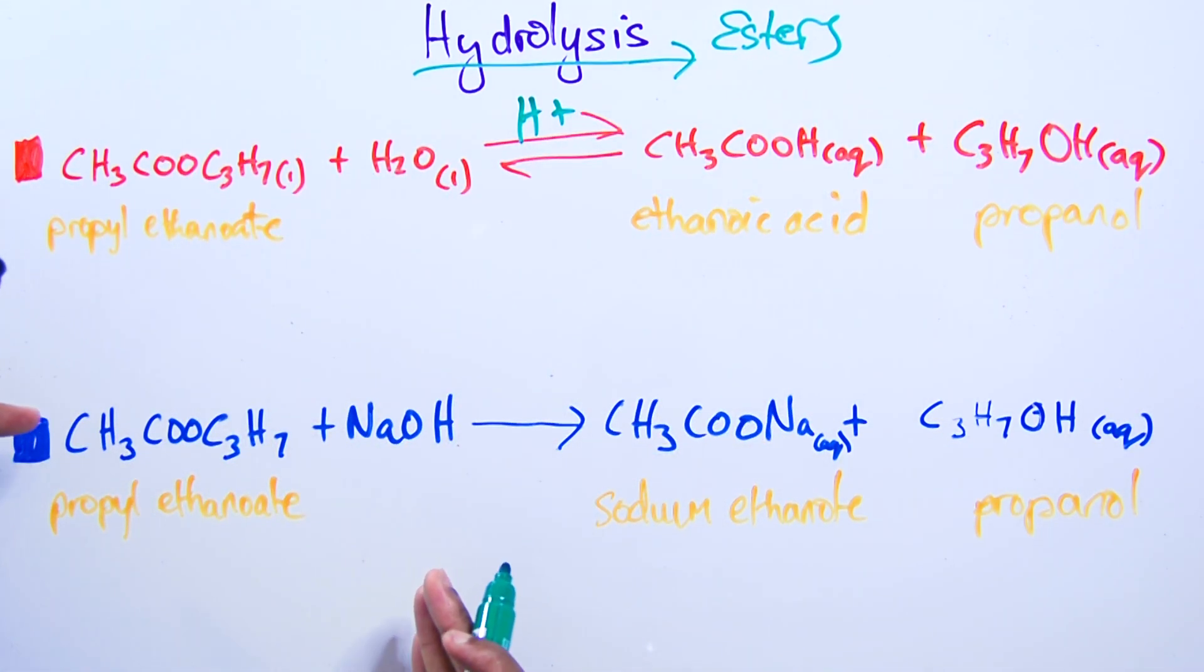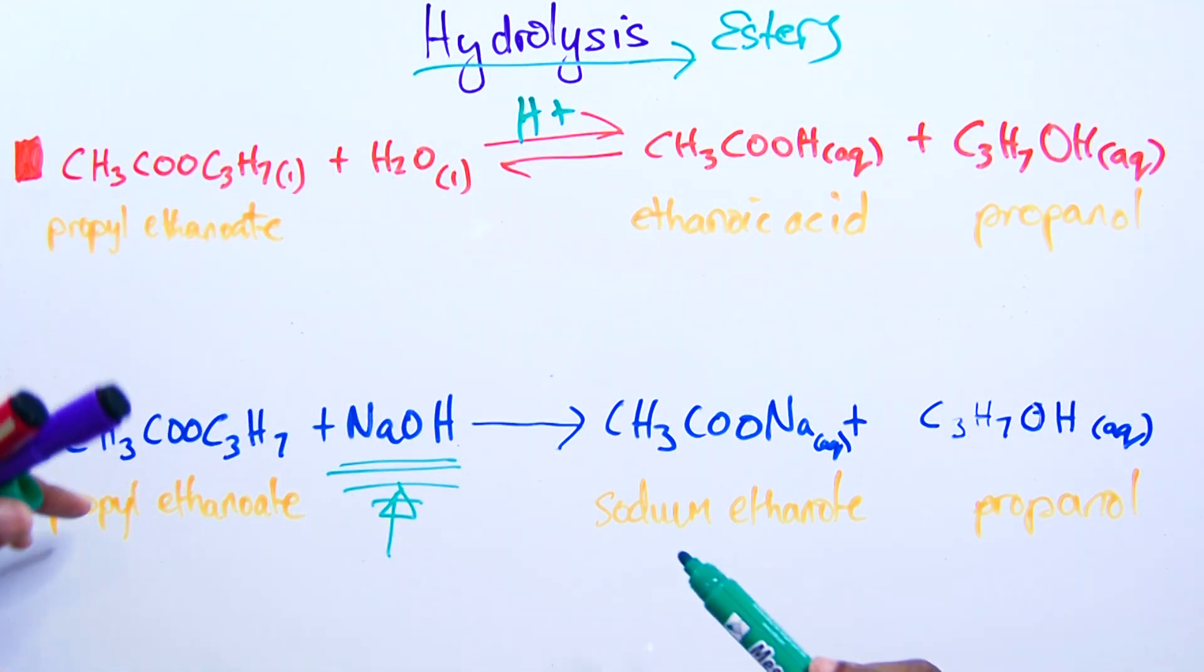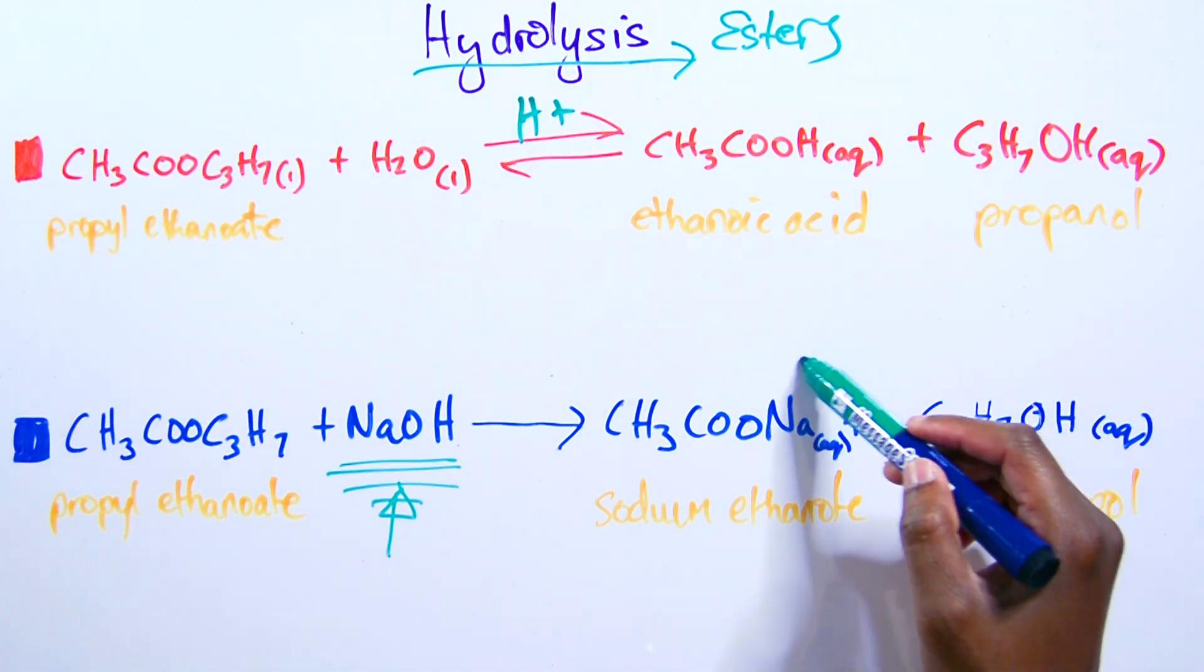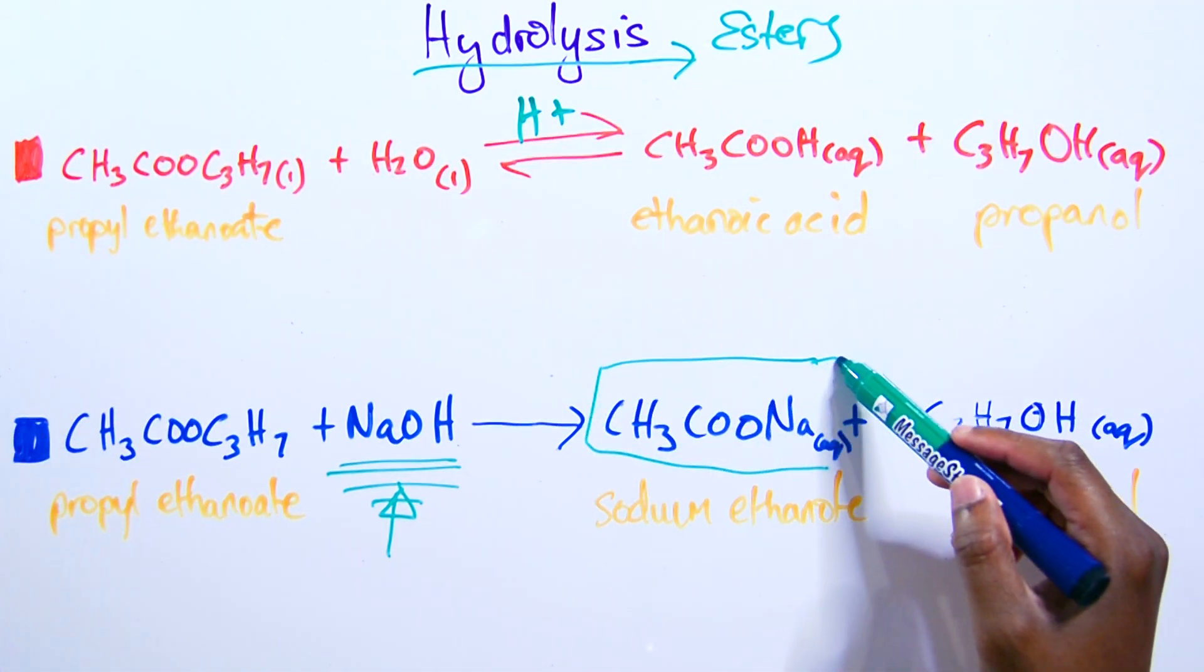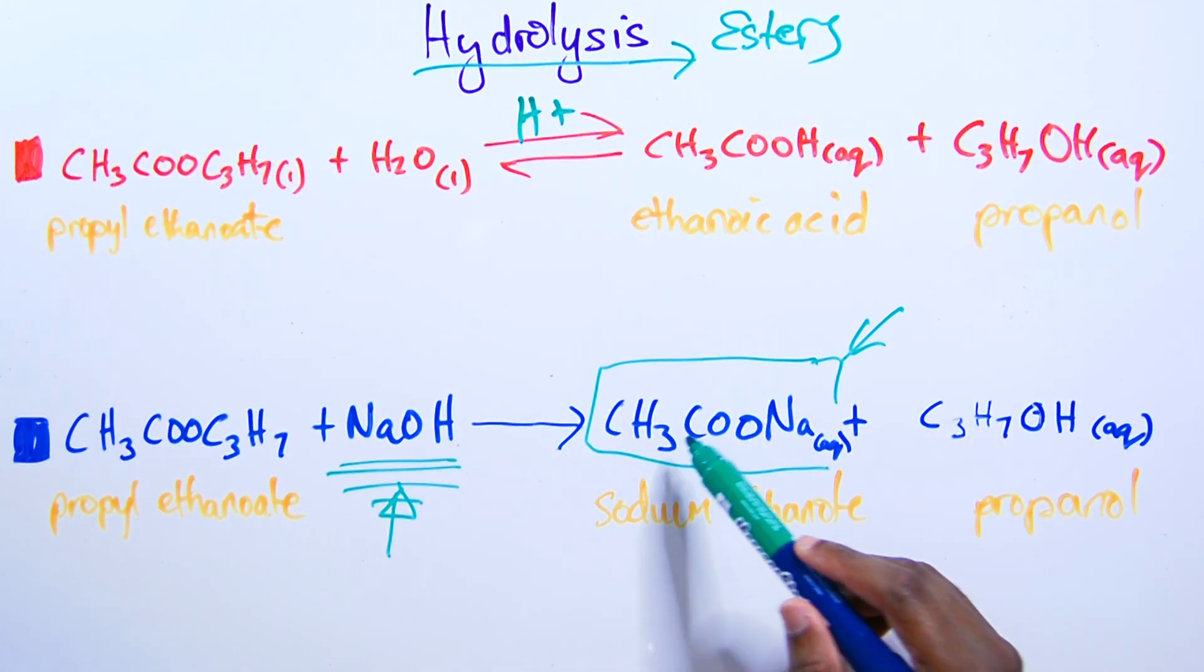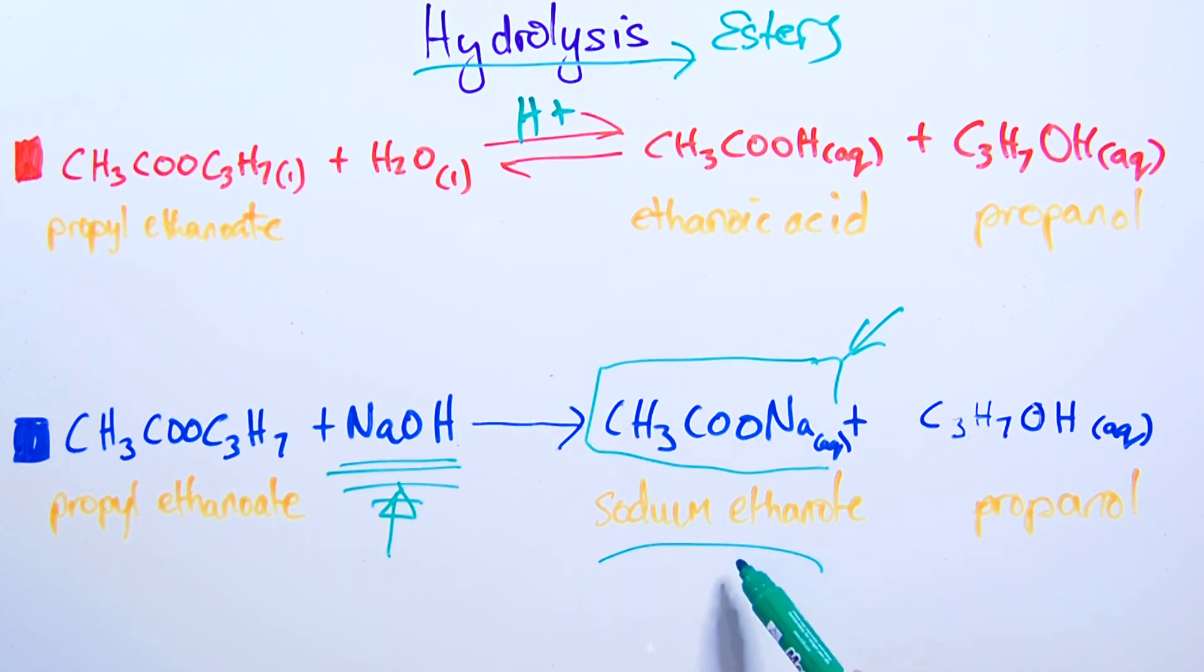And this one is an alkaline hydrolysis. You notice the presence of an alkali. Sodium hydroxide. And you'll get the same thing. Except in this situation here. You will not end up with the acid. You'll end up with the salt of the acid. CH3COONa, sodium ethanoate.